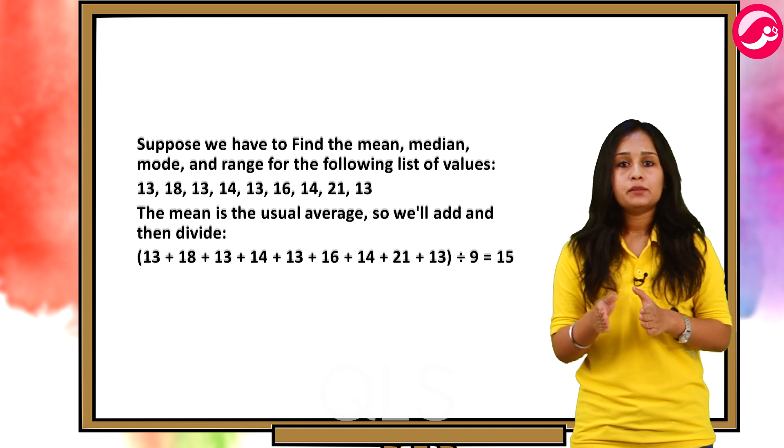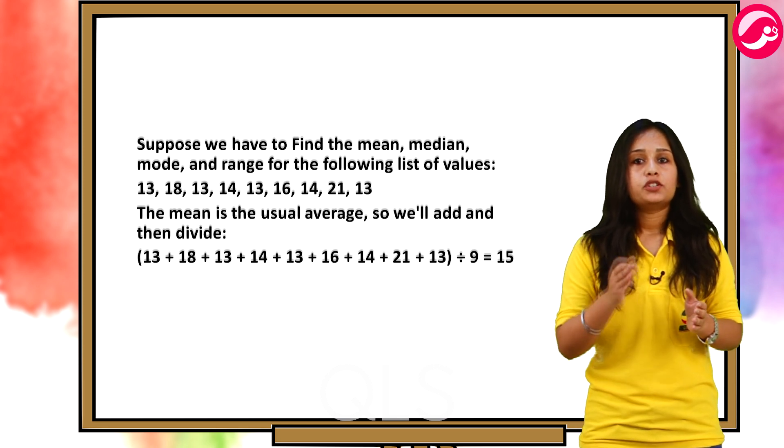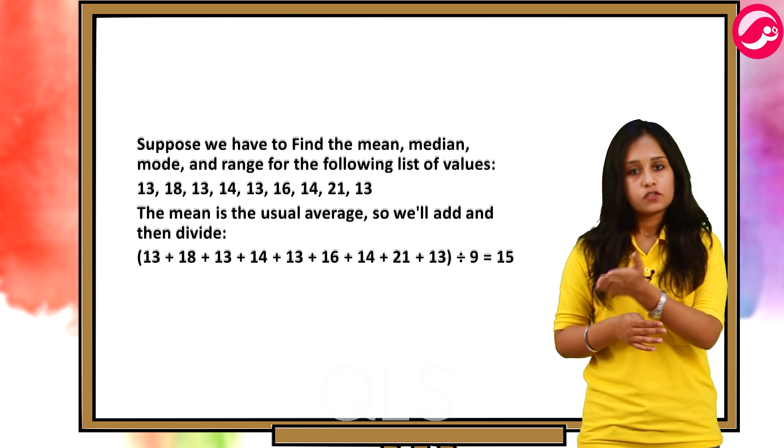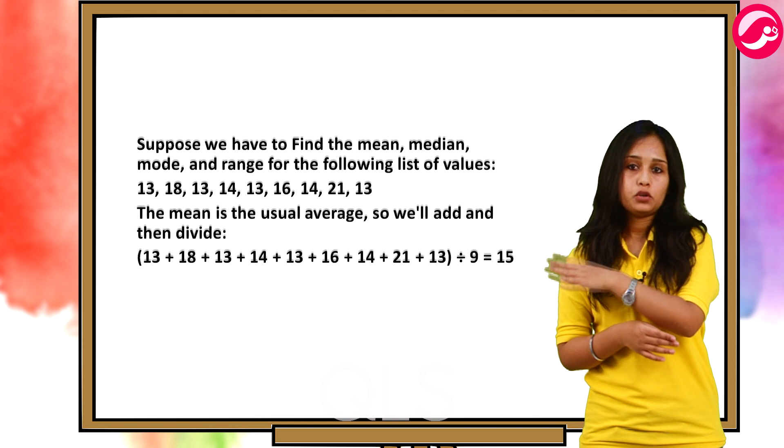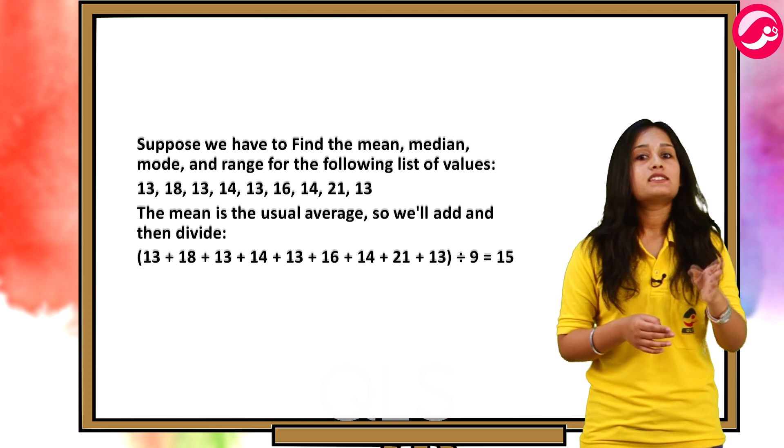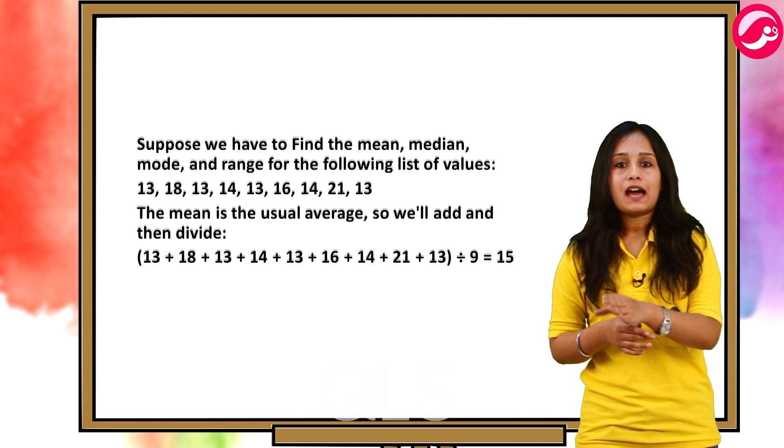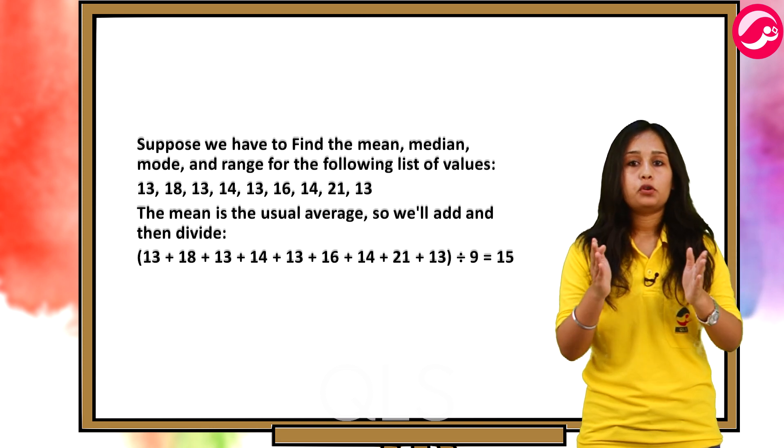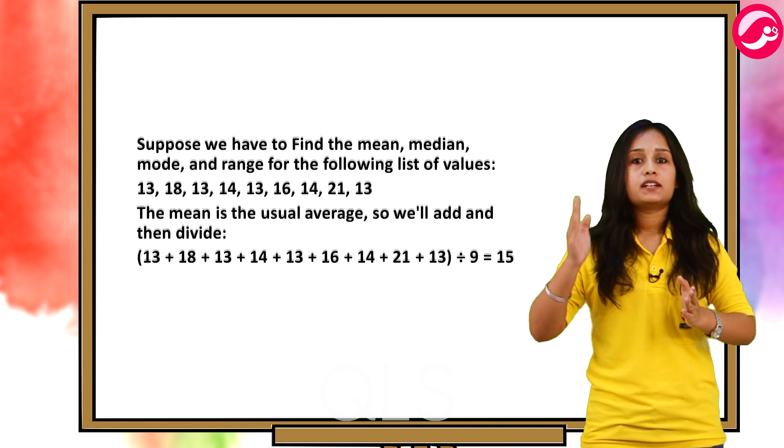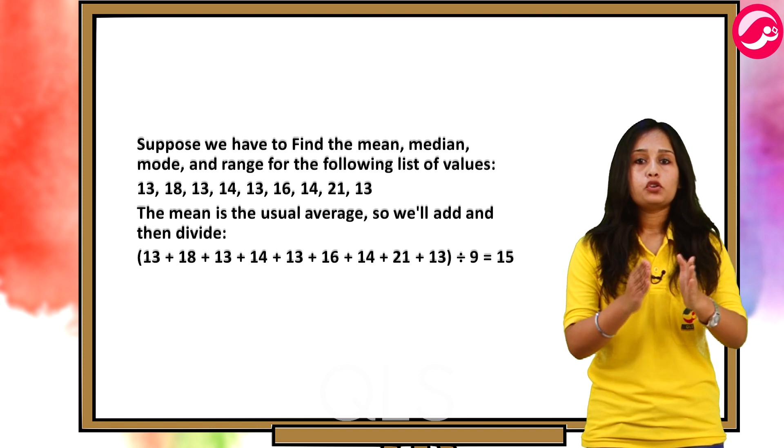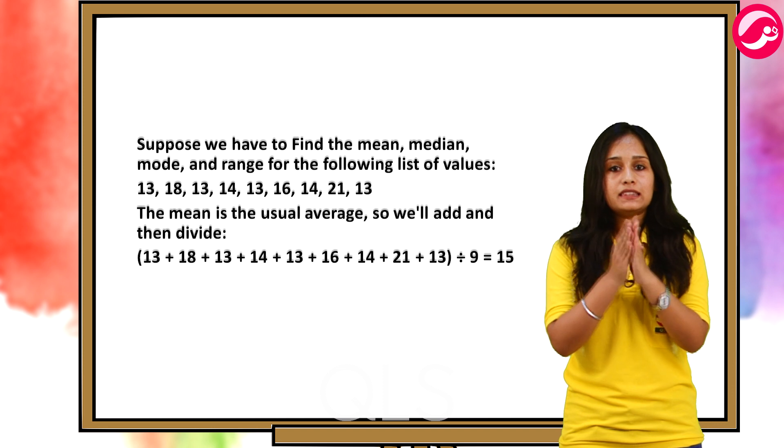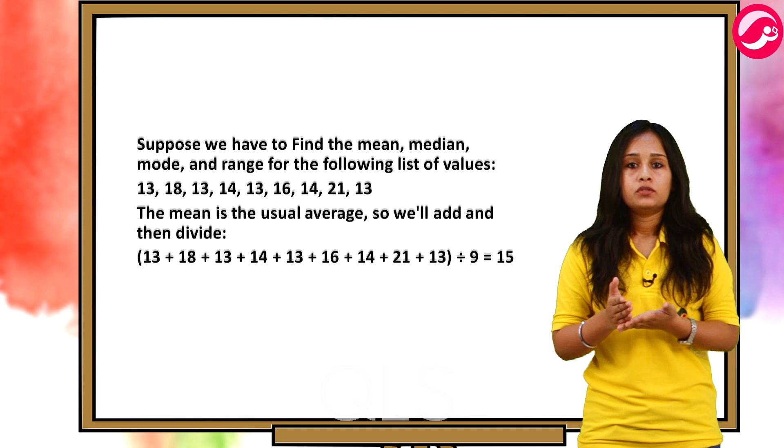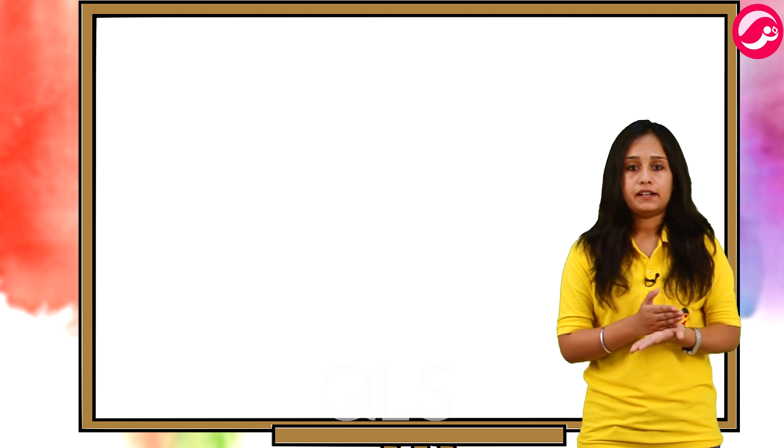Suppose we have to find the mean, median mode and range for the following list of values. We are given the values 13, 18, 13, 14, 13, 16, 14, 21, 23. The mean is the usual average. So, we will add and then divide. So, we add all the values and divide it by 9 since we have a total of 9 values. This gives us 15. Now, I want you to note that the mean in this case is not a value from the original list. So, it can be a different value than a value from the provided data.